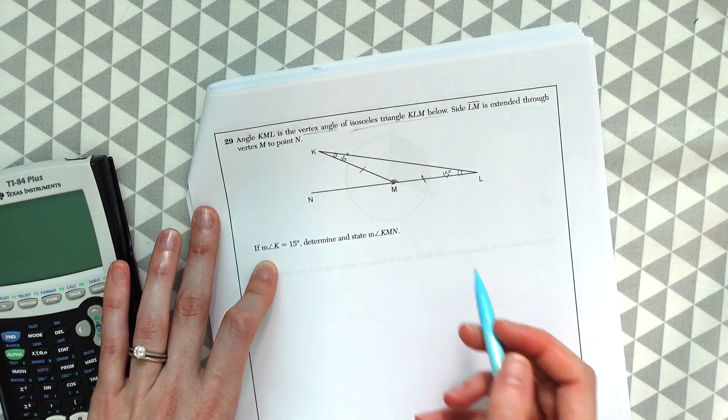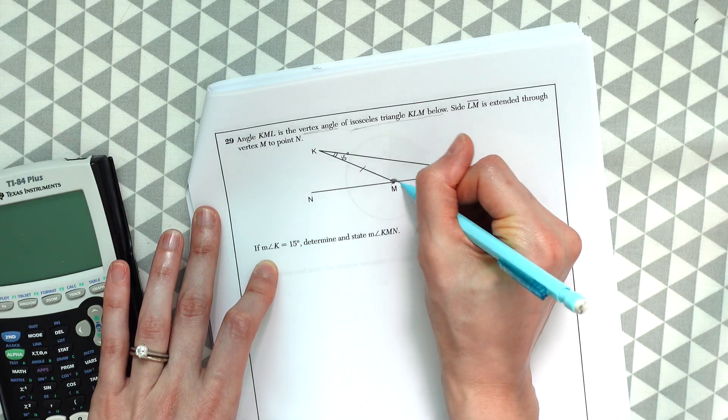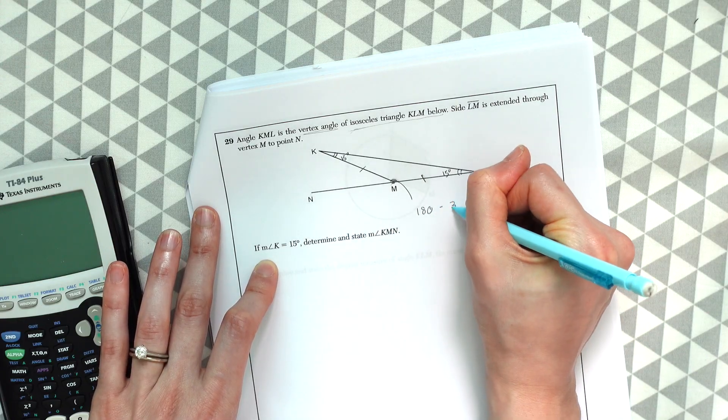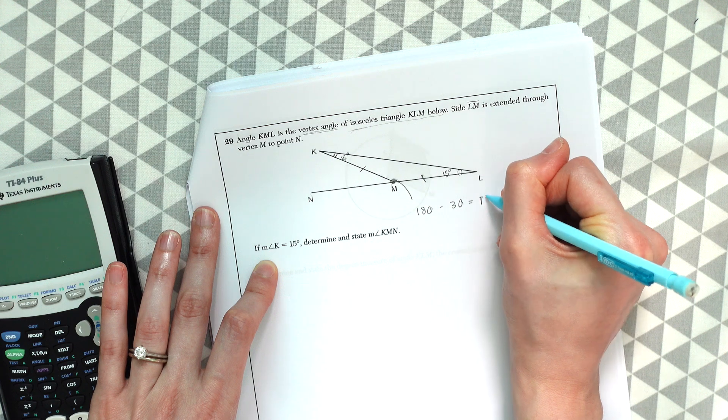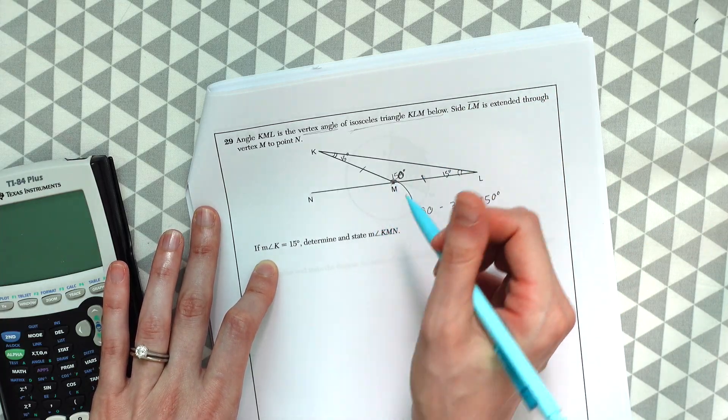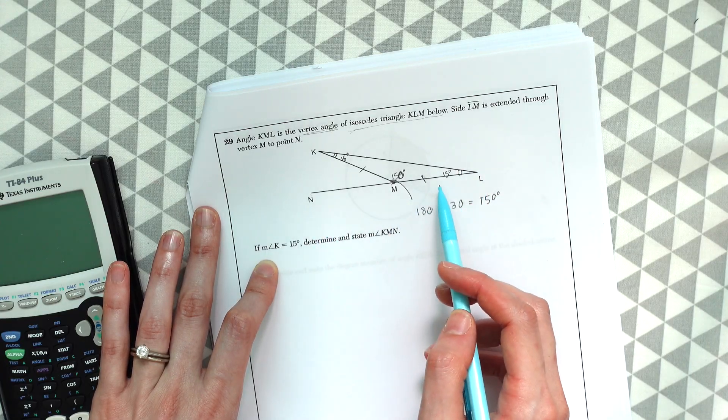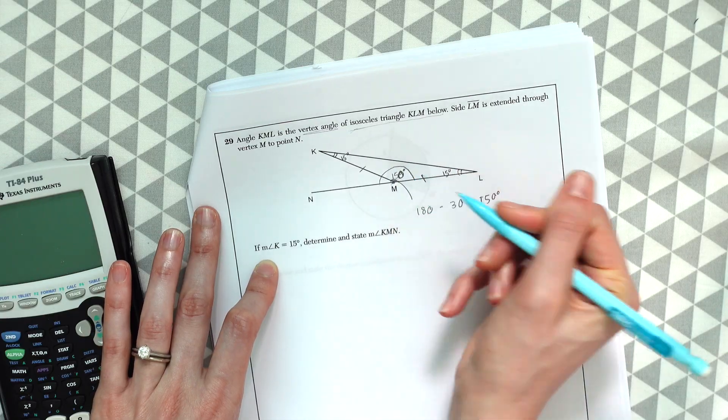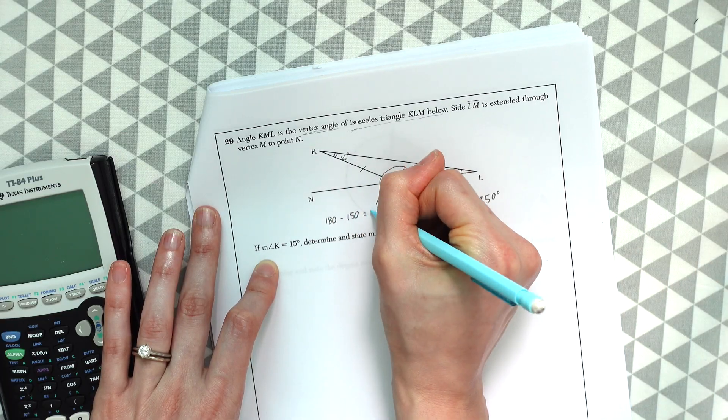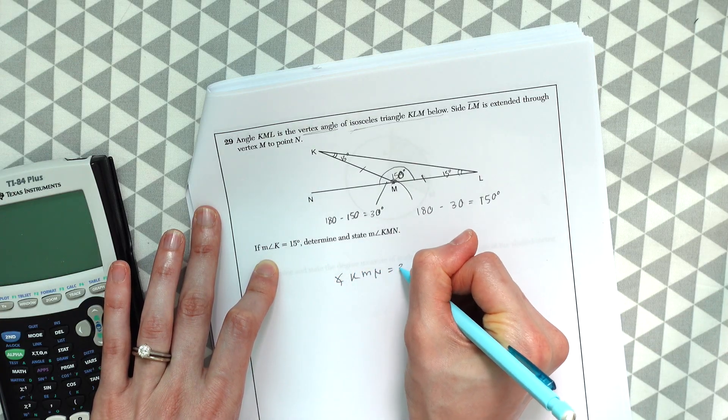And then from there, because this is a triangle KML, we know that this is all going to add to 180. So we could find angle M. So to get this, we're going to do 180 minus 15 plus 15 or minus 30, which will give us 150 degrees. So angle M right here is 150 degrees. And then because this is a straight line, they said side LM is extended through vertex to point N. So we know that this whole thing also adds to 180. So to get this angle here, we're going to do 180 minus 150, which gives us 30. So we know that angle KMN is equal to 30 degrees.